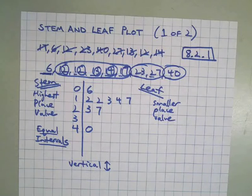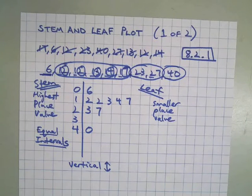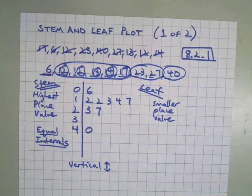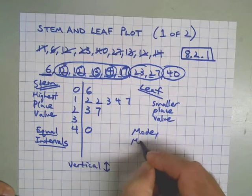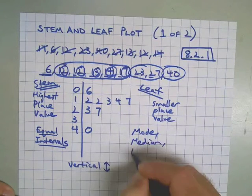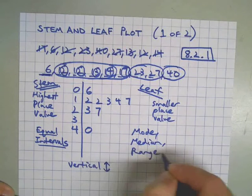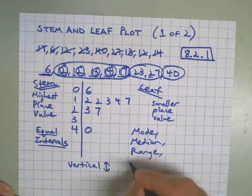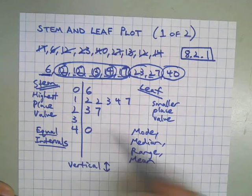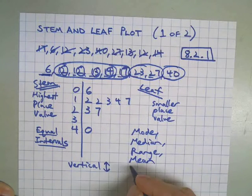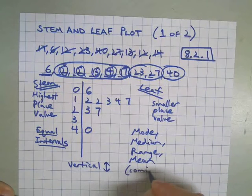There's the stem-and-leaf plot. Now based on that, you can find measures of central tendency, such as the mode, the median, range, the mean, any of those things. Just looking at a stem-and-leaf, and that will be in part two of the video.